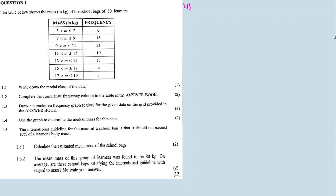Now, if you have the number 15 in a data set, that's your mode. But if you have a frequency table, we speak of something called the modal class. The modal class is the one with the highest frequency. So the modal class — 21 is the highest frequency.